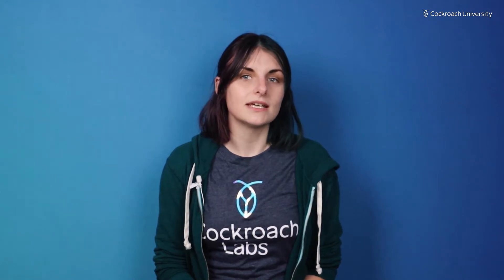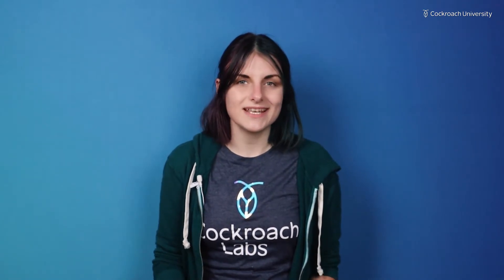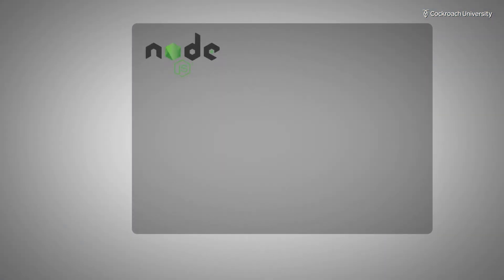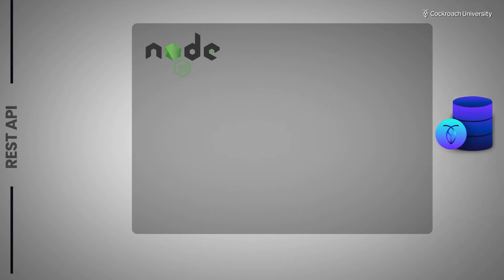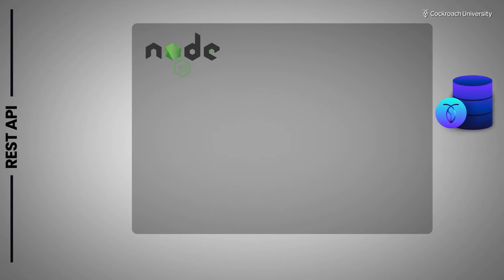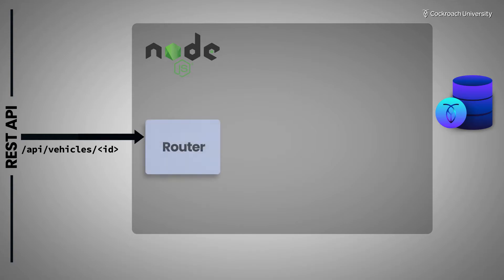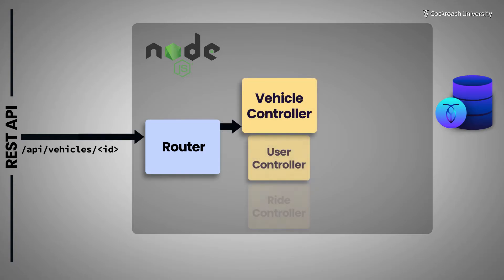If you're familiar with using Node.js with Express, you probably have a pretty good idea about how the Mover backend works. If not, the easiest way to understand the process is to walk through an example. Let's say a user wants to visit the page to look at a vehicle's detail. The frontend sends an HTTP request to the backend via the REST API. In the backend, the router receives the request and forwards it to an appropriate controller function.